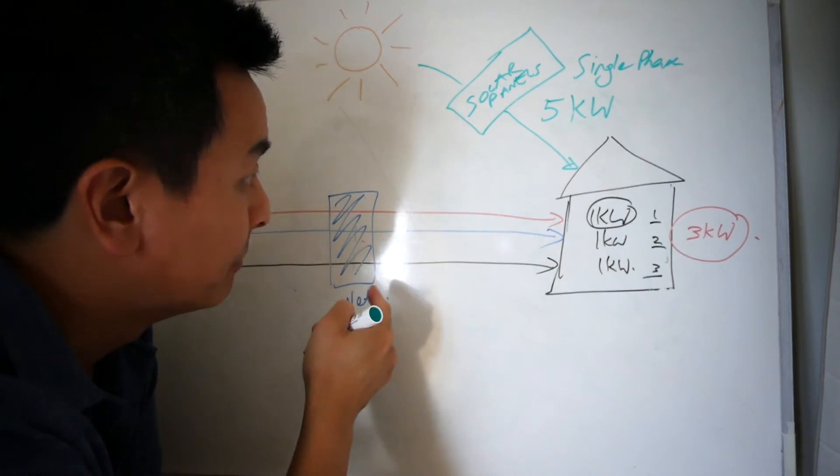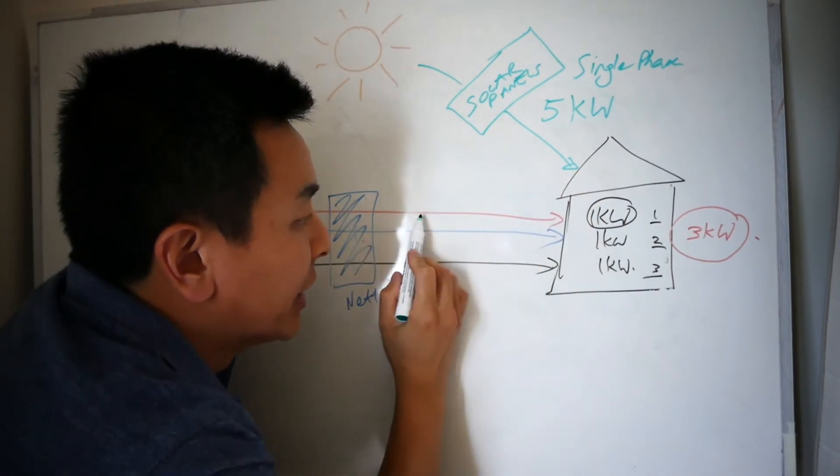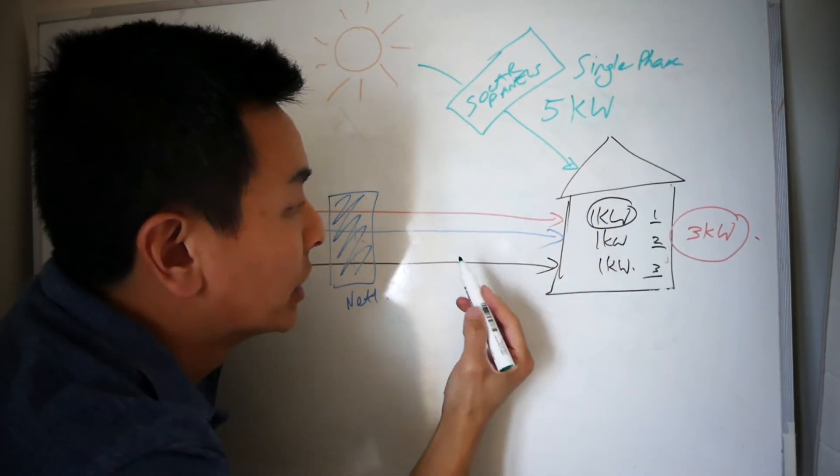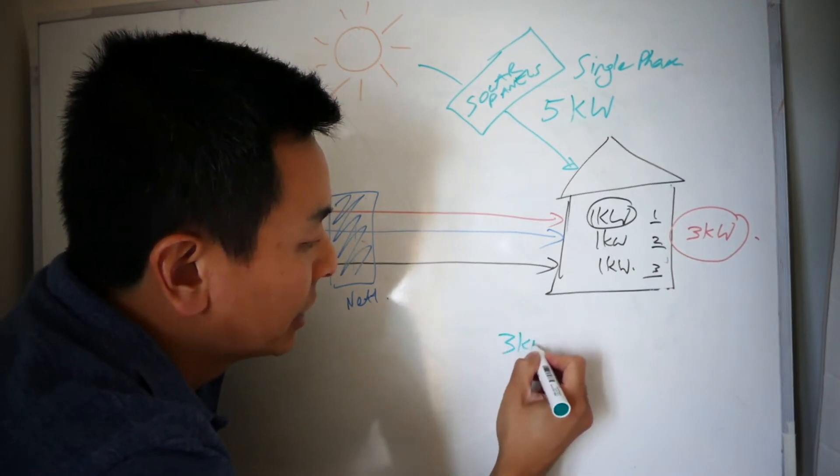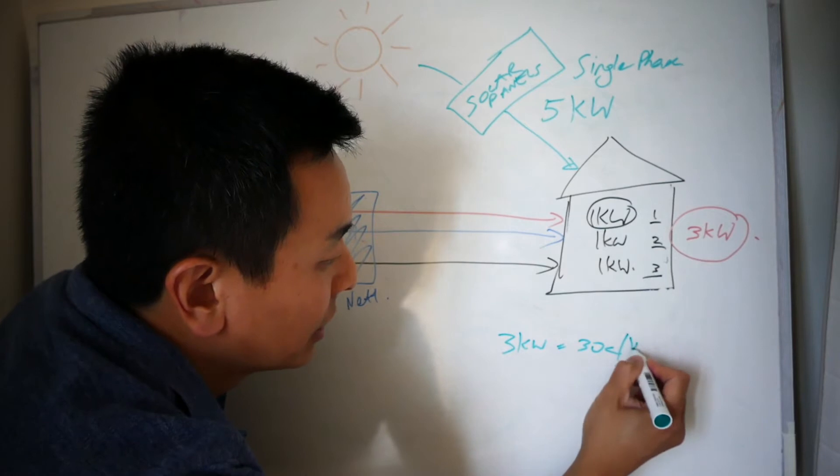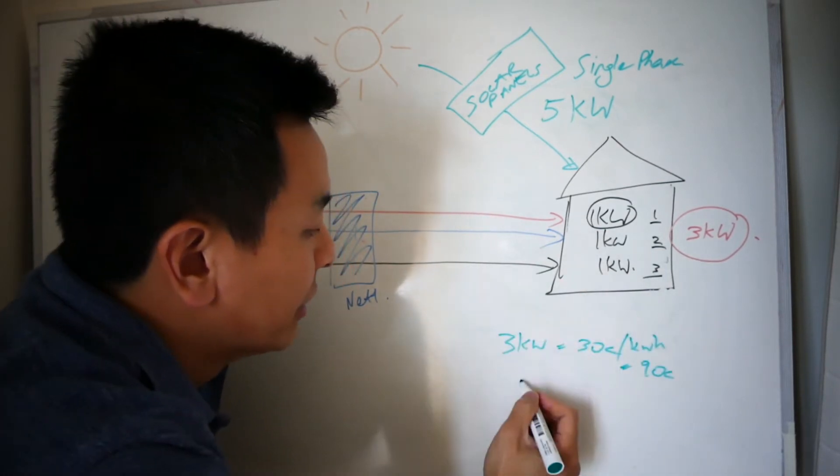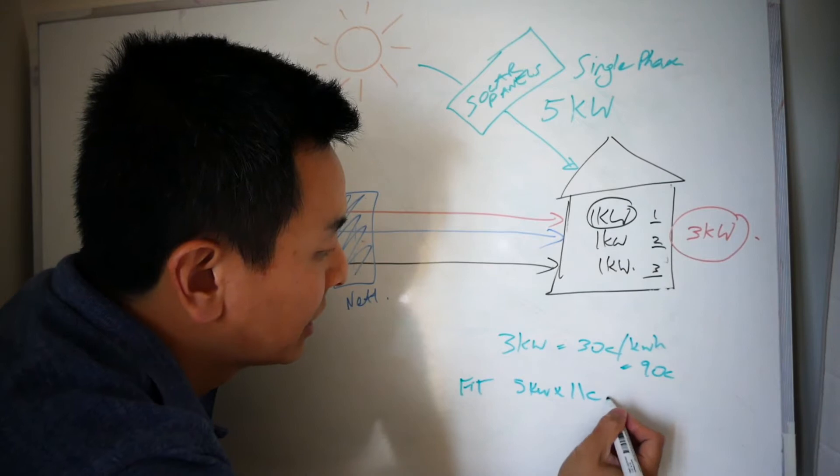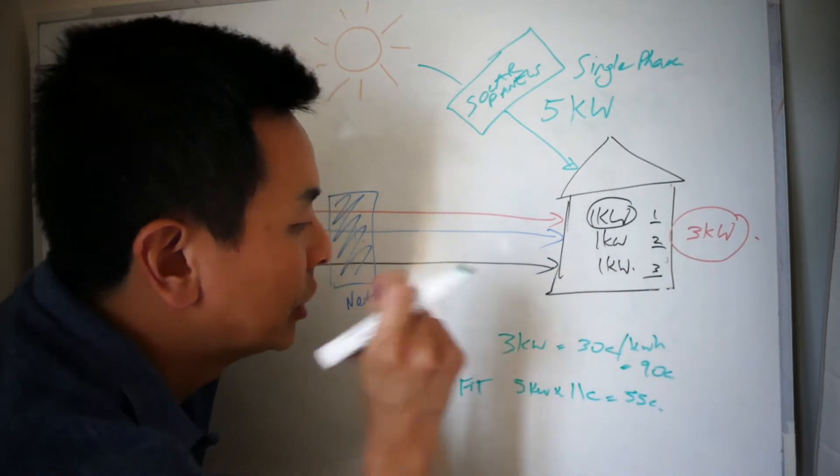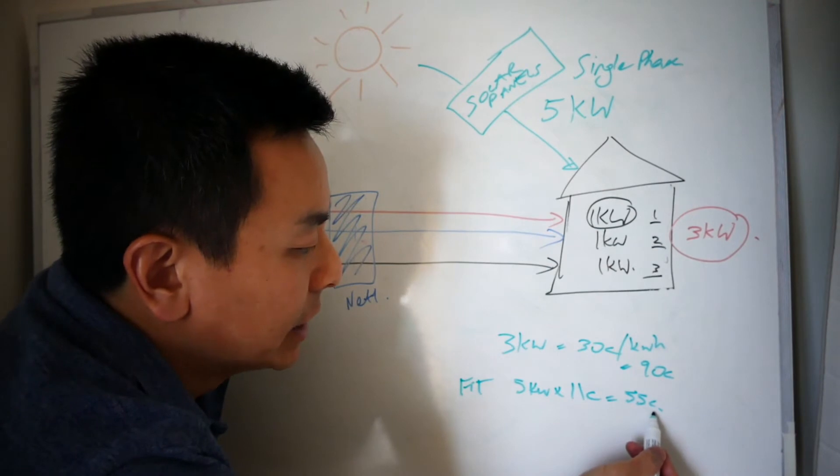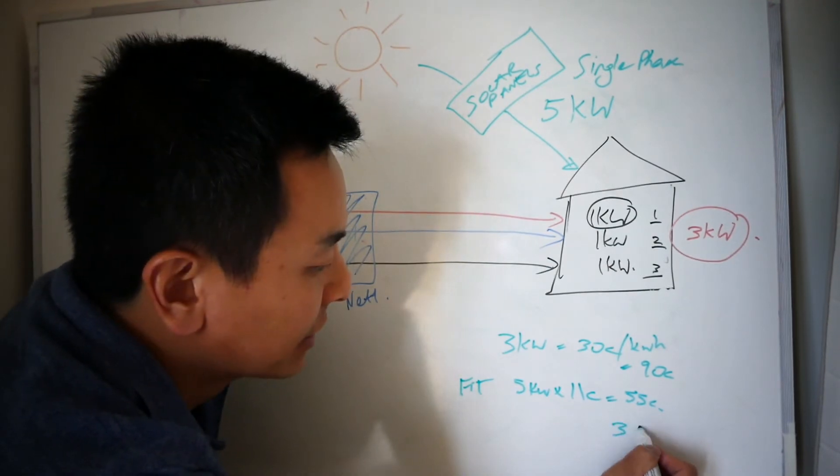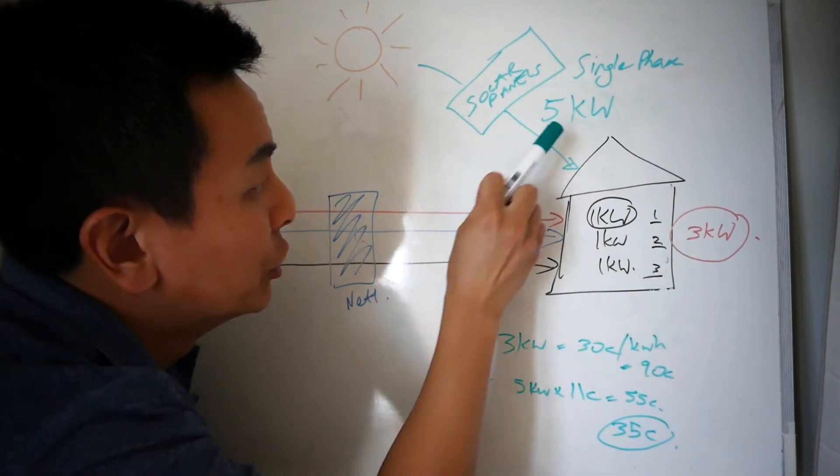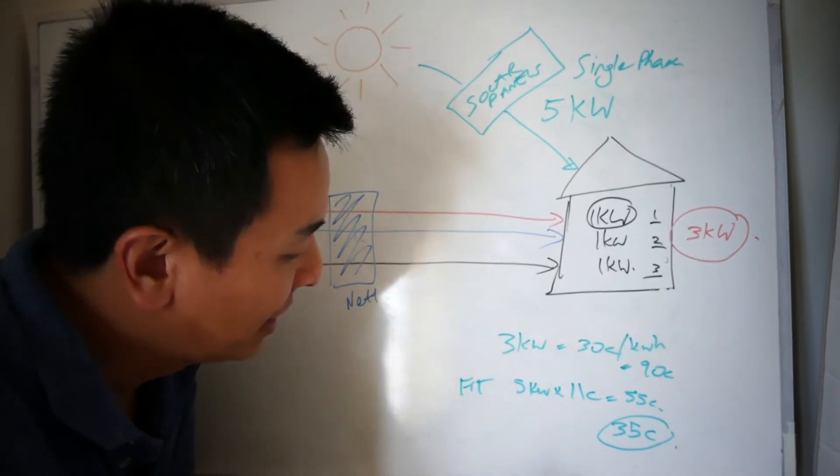So if you had a gross meter, you would still be charged for supply from the grid for three kilowatts. And you would get a feed-in tariff of five kilowatts. So if I was getting charged for three kilowatts at say 30 cents per kilowatt hour, I'd be charged 90 cents. If I were to give a feed-in tariff five kilowatt times 11 cents, it would be 55 cents in total. So as you can see, I'm getting charged 90 cents, but I give back to the grid 55 cents. So that's a 35 cent deficit. So I'm actually getting charged, even though I'm producing more energy than I need for my home. And again, that would suck. Not so good.